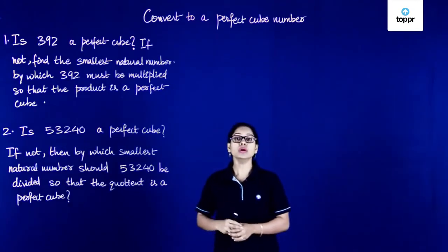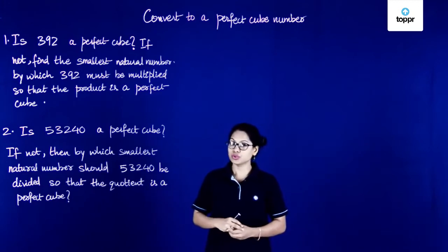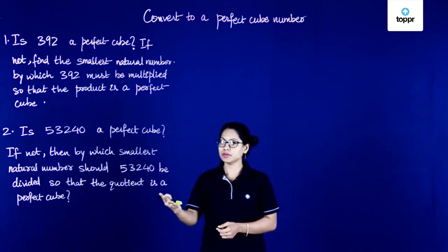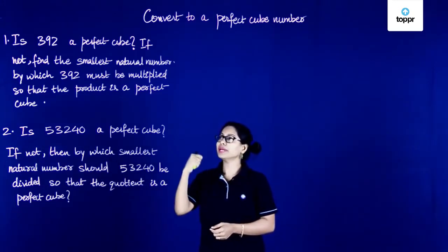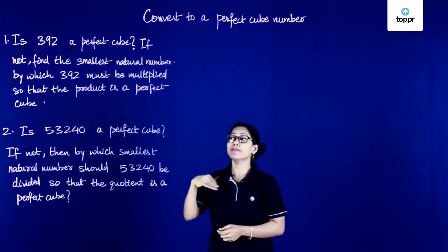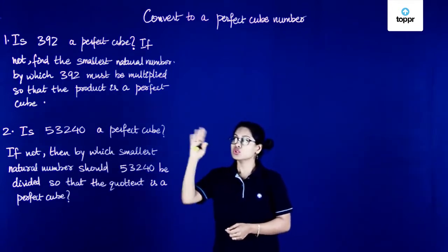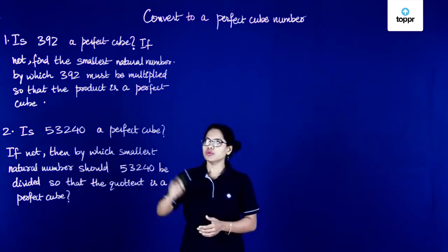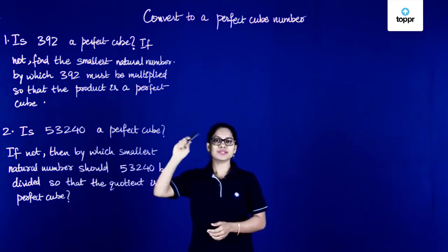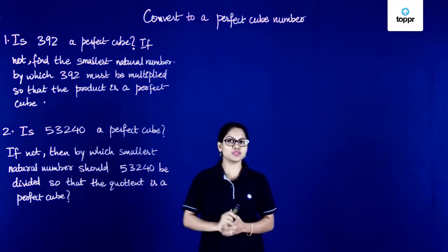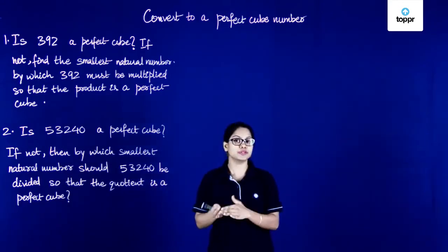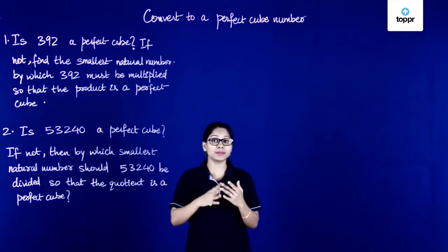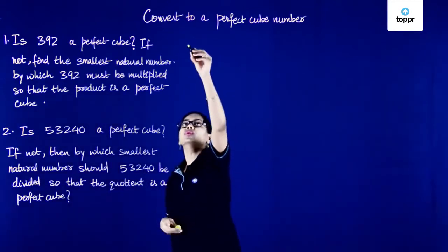Is 392 a perfect cube? If not, find the smallest natural number by which 392 must be multiplied so that the product is a perfect cube. In order to answer the first part of this question — whether 392 is a perfect cube or not — we need to start with the prime factorization of 392.